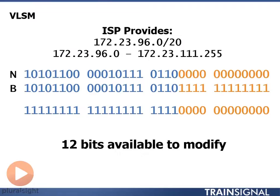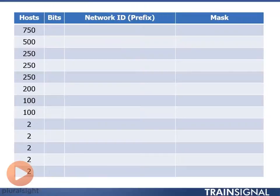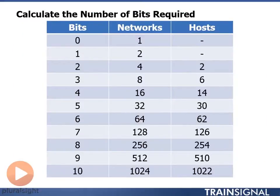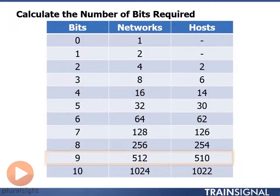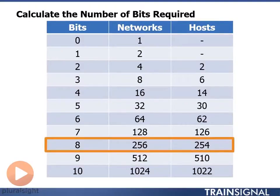Let's solve the problem. First, we find our range: with 12 bits to modify, addresses go from 172.23.96.0 through 172.23.111.255. We build our chart with host requirements starting at the top: 750, then 500, then 250s and 200, then 100, and then 2s for the networks linking routers together. We calculate the number of bits required. To get 750 hosts per network we need 10 bits, and to get 500 hosts per network we need 9 bits. For 200 to 250 hosts per network we need 8 bits.